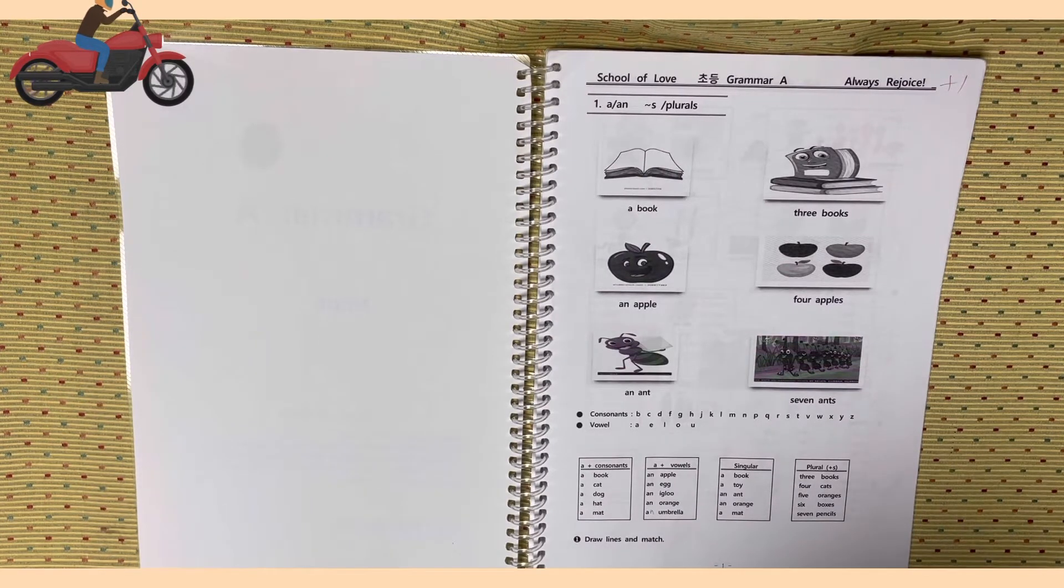자음이 맨 앞에 있으면 A를 붙입니다. A book, a cat, a dove, a hat, a mat. 모음이 있으면 AN을 붙여요. An apple, an egg, an igloo, an orange, an umbrella.